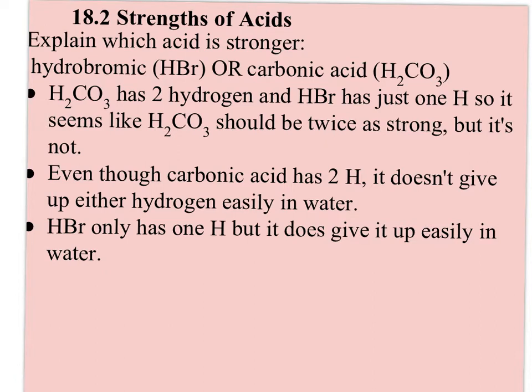We just talked about monoprotic and polyprotic acids. When I look at this, I see that hydrobromic only has one hydrogen to lose, but carbonic has two hydrogens to lose. So it seems like H2CO3 should be twice as strong, but it's not. Hydrobromic acid is actually a strong acid, and carbonic is actually a weak acid. So even though carbonic acid does have two hydrogens it can give up, it doesn't give up either hydrogen easily in water.